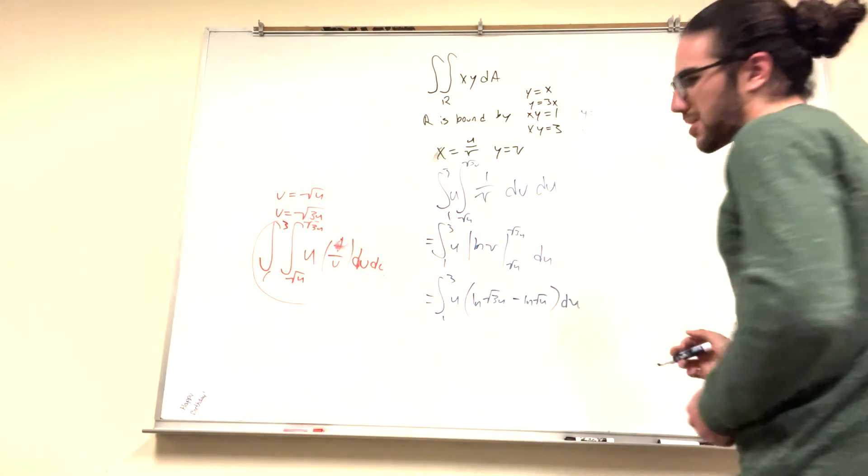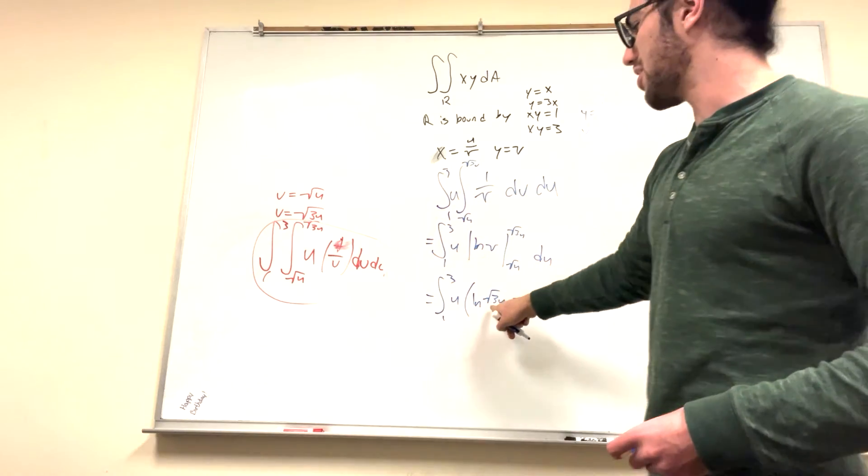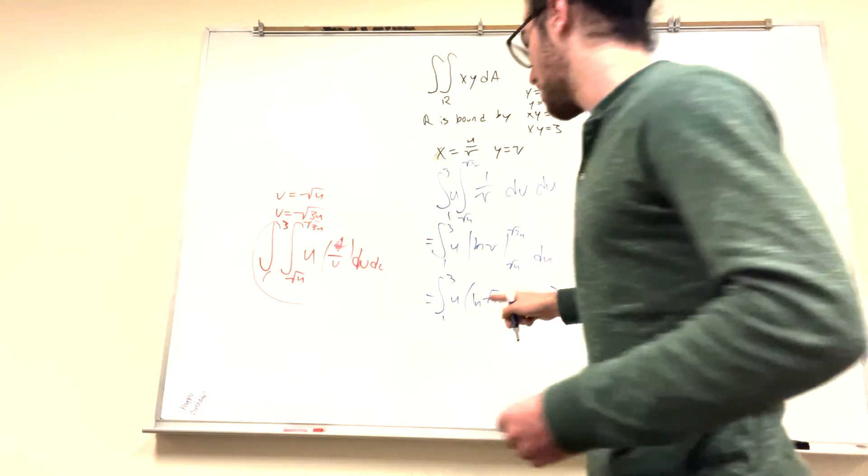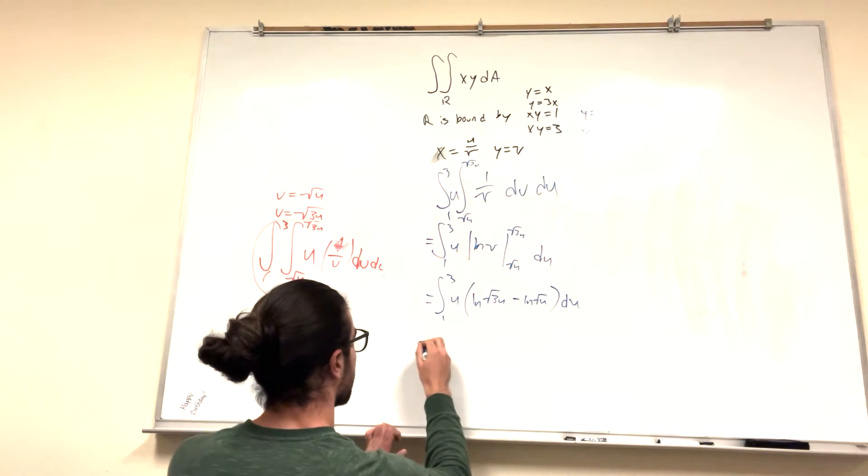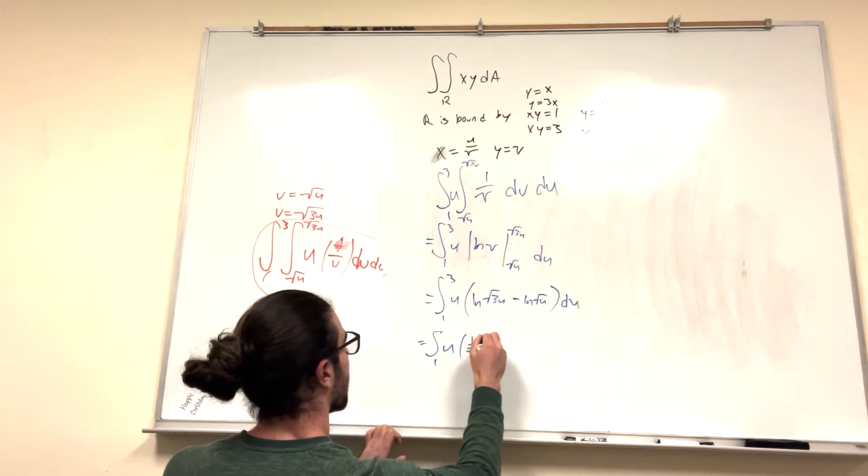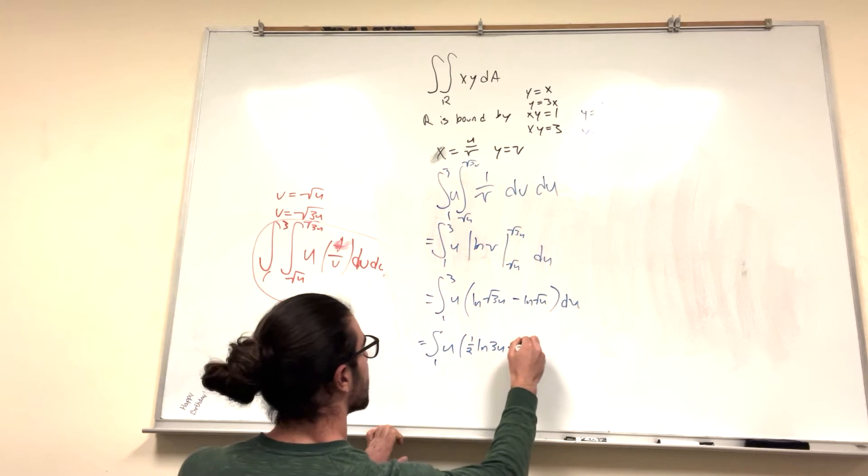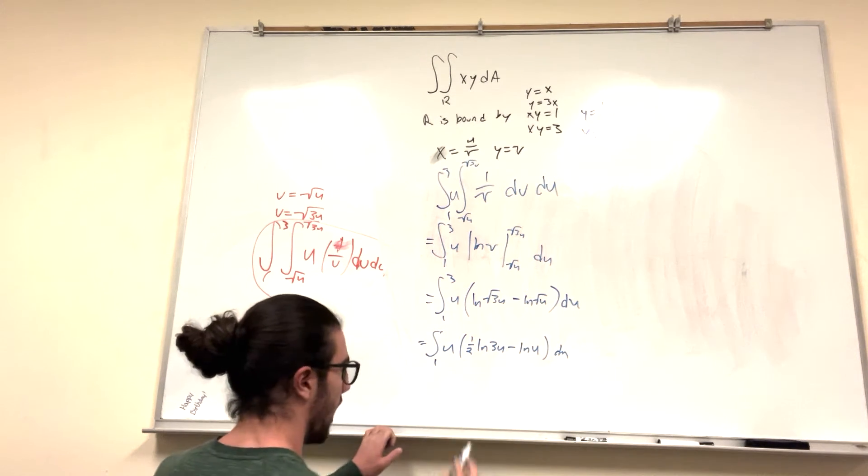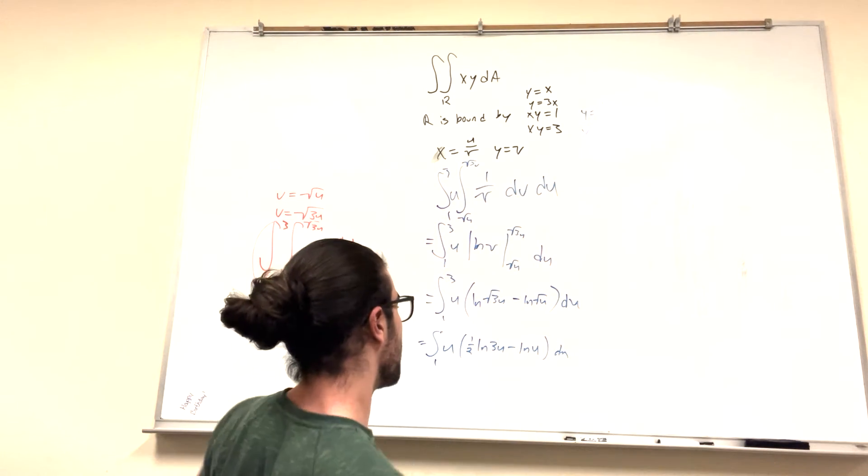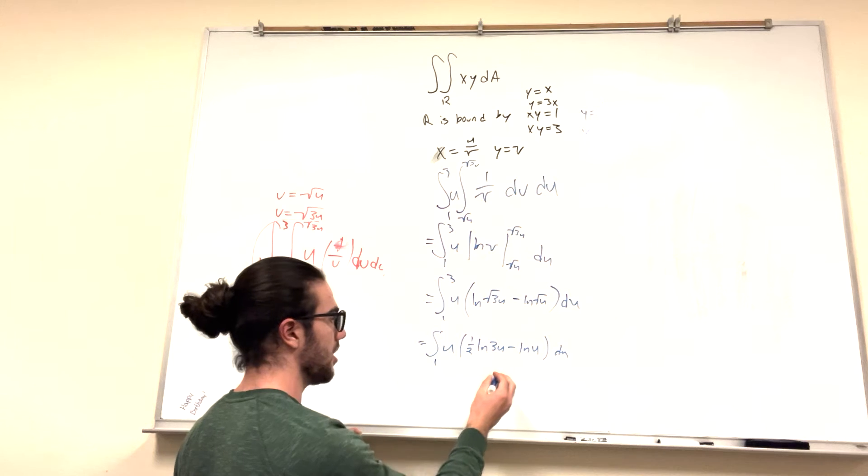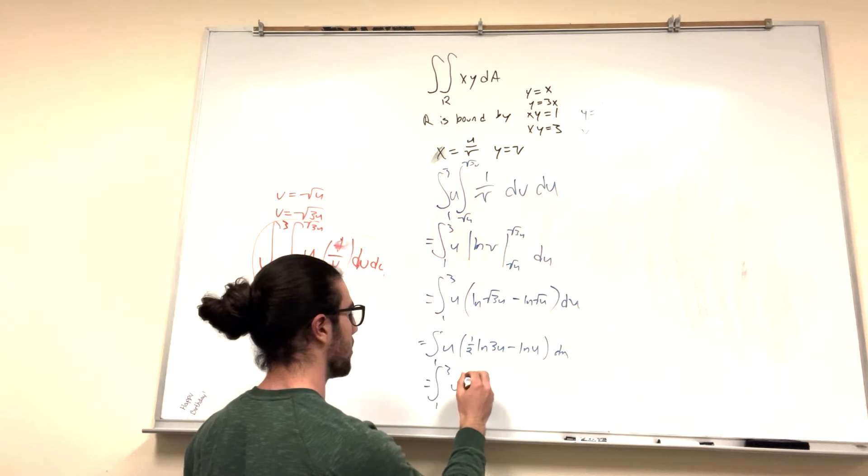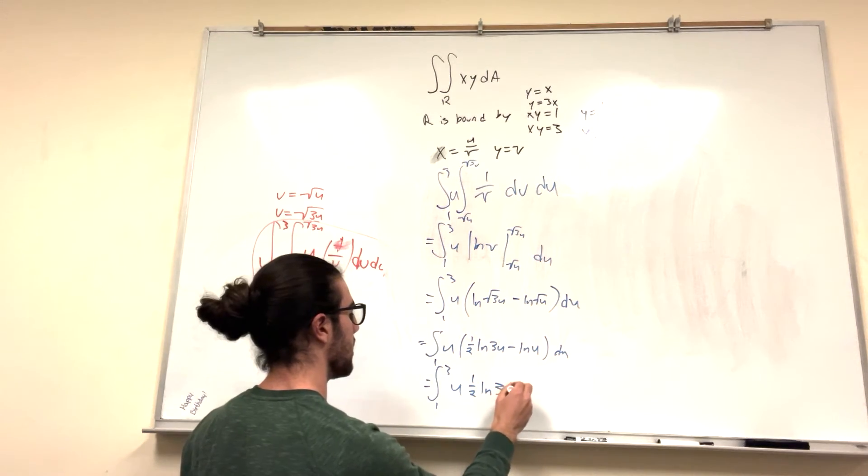So now we look at our properties of ln. If you have the square root inside, what you can do is you can actually bring out a one-half and it gets rid of the square root on the inside. So this is equal to one-half ln of 3u minus ln of u, du. And then you know when you're subtracting ln's, it's like the same as you can divide the insides of them. So if you take 3u and divide it by u, you just get 3. This is equal to 1 to 3 of u, one-half ln of 3 du.